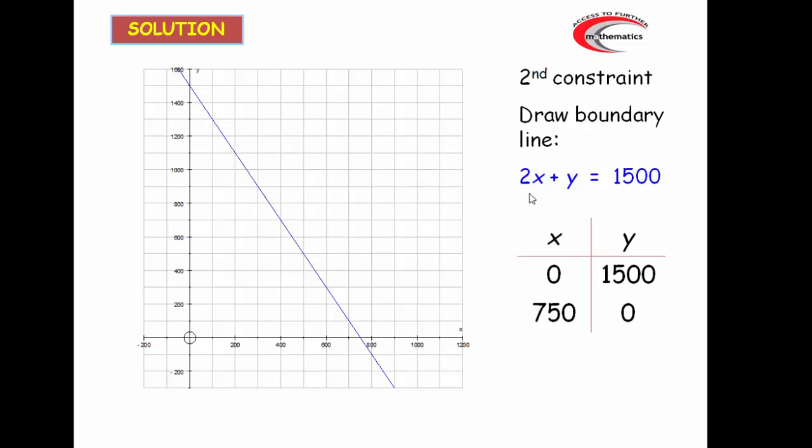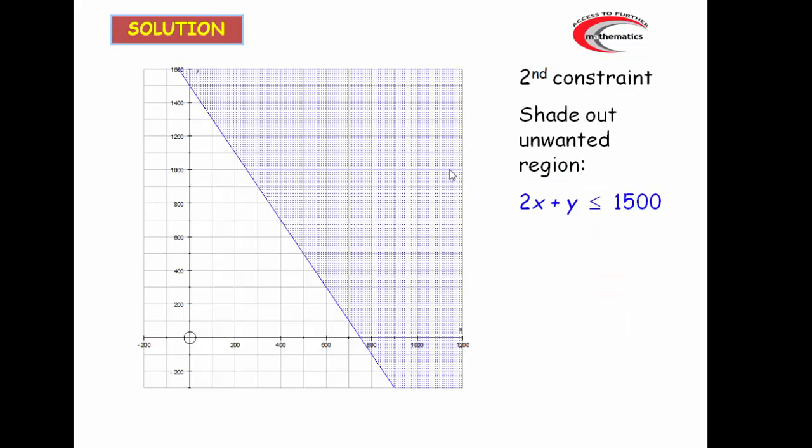The second inequality was 2x plus y is less than or equal to 1500. So we draw the line 2x plus y equals 1500. Again, x is 0 means that y equals 1500. And when y is 0, 2x equals 1500, so x will be 750. So we get this line here. And again, it's less than or equal to, so we shade off the bit above.